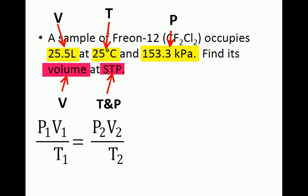So P1 is 153.3 kilopascals, V1 is 25.5 liters, and T1 is 25 degrees Celsius. We are given STP for the second set of conditions, which represents standard temperature and pressure. Standard temperature is always 0 degrees Celsius, and standard pressure is always 1 atmosphere. So T2 is 0 degrees Celsius, and P2 is 1 atmosphere. V2 is what we are solving for in the problem.